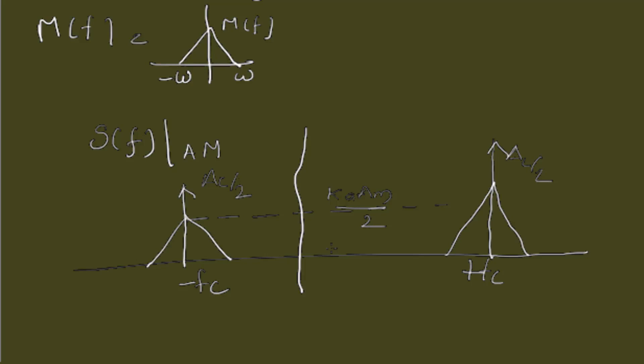From this, this will be fc plus W and this is fc minus W, where W is the maximum frequency of the message.